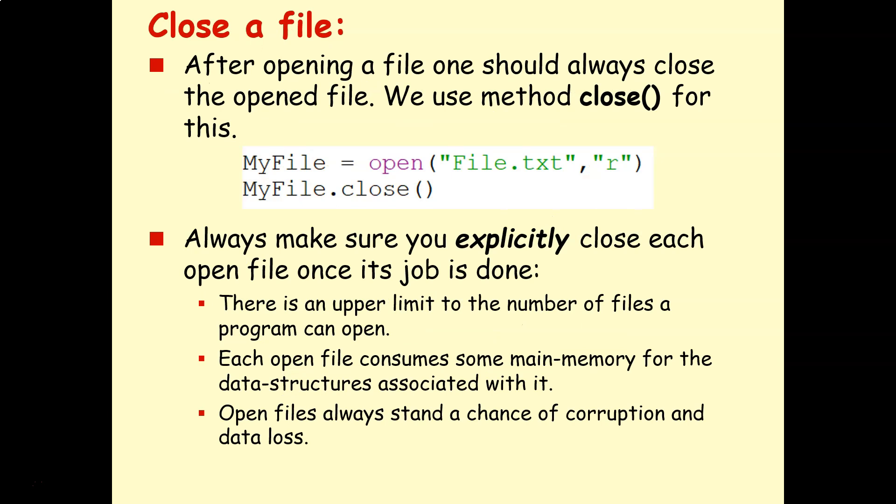So after opening a file, and then doing whatever we need to do with it, we should always close the file using the .close method. So you can see that I've got that here. I've just got myfile.close. Always make sure you explicitly close each open file once its job is done, and there's some good reasons for this. There's usually an upper limit to the number of files a program can open at once. Each open file consumes some main memory for the data structures associated with it, so you'll start using up lots of memory.